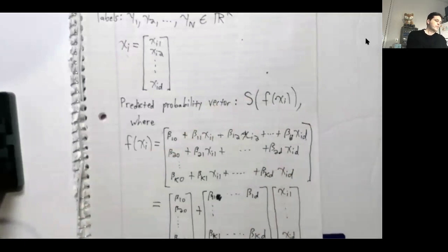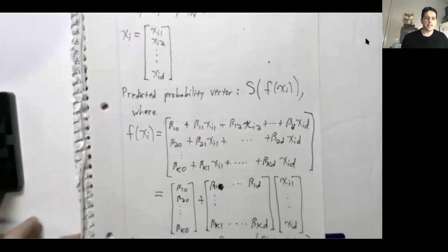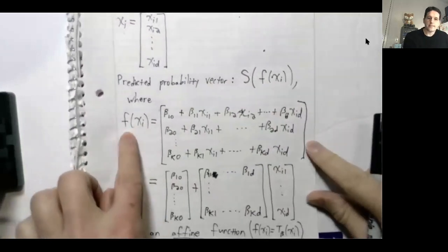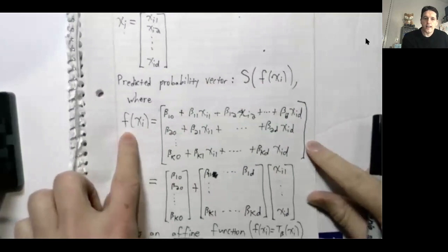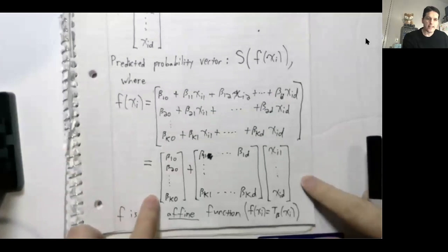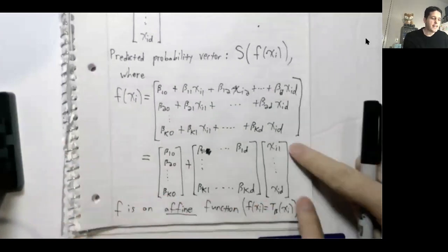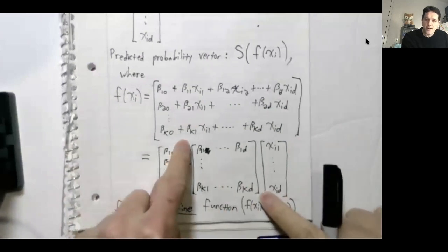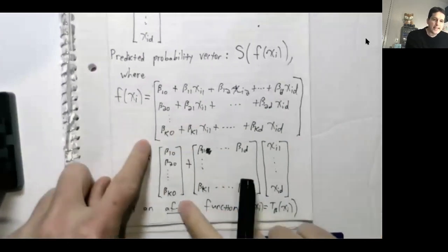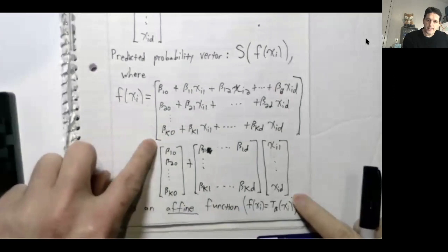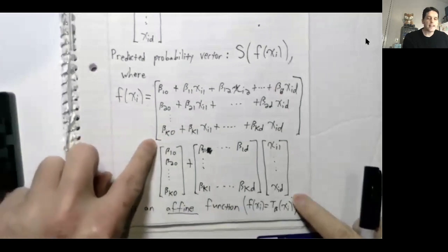That's how multi-class logistic regression works. Now let's take a closer look at this function f. We can write it using vector and matrix notation: we take our vector xi, multiply it by a matrix, and then add a vector. This type of function f, given by this formula, is called an affine function.